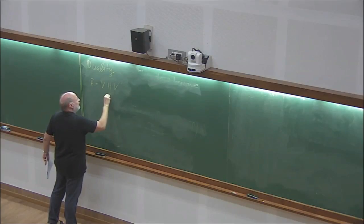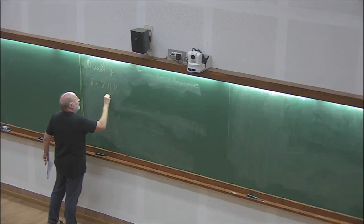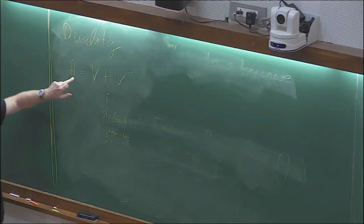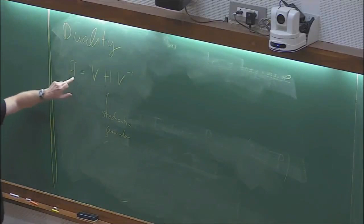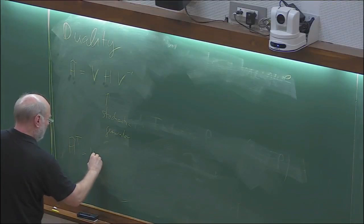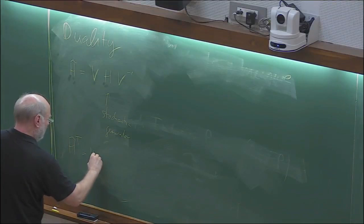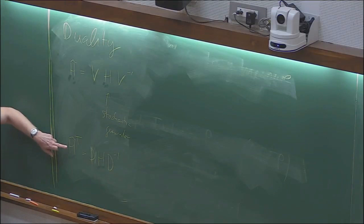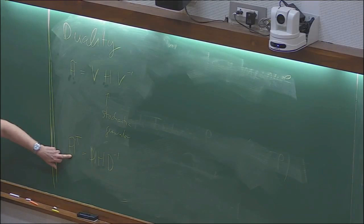More generally: if you have a matrix H that is a stochastic generator, you can make a similarity transformation W H V to get a different stochastic generator—these two processes are closely related. Similarly, if H^T = D H V^{-1} relates two generators, information about one gives information about the other. This motivates defining duality more generally.